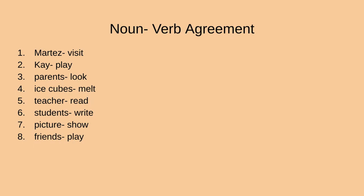Number five: 'My teacher reads a book' or 'my teacher read a book'? We would have to add the letter S to the end — reads — because there's only one teacher. My teacher reads a book. Number six: students and write. The students write a story. We would leave the word write alone because we have more than one student, so students write.